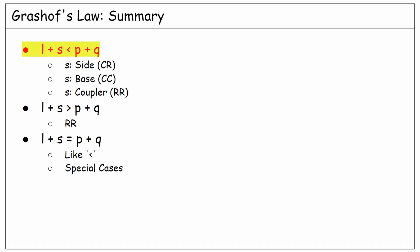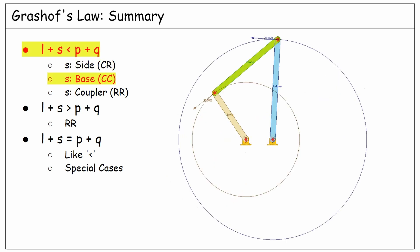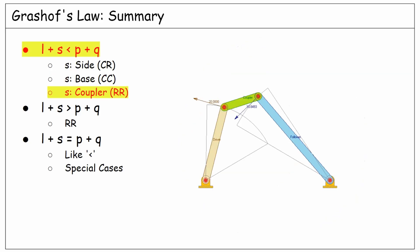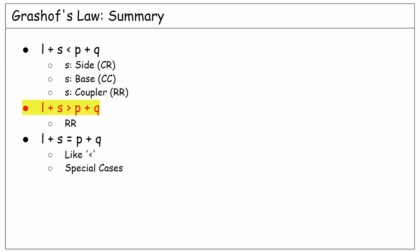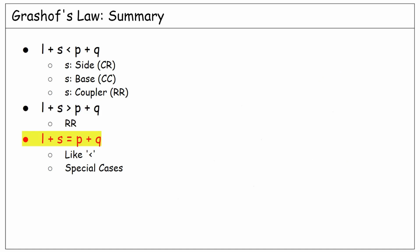To summarize: if the longest plus shortest is less than the summation of the two others, we have three subcases depending on the role of the shortest link — crank-rocker if it's a side link such as driver or follower, crank-crank if it's the base, and rocker-rocker if it's the coupler. If the longest plus shortest is greater than the summation of the two other links, in any case we will have a rocker-rocker motion. Lastly, in the case of equal L plus S and P plus Q, we will have the same subcases as the less-than condition, except for a few special cases to be discussed in the next lecture.